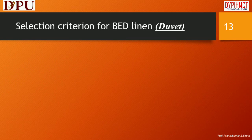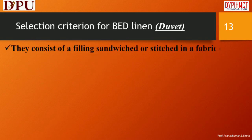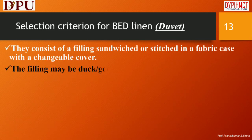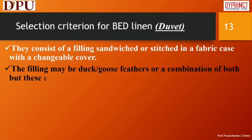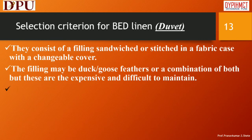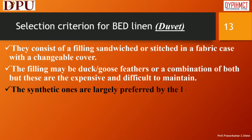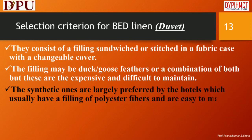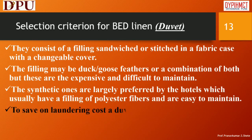Selection criterion for bed linen — Duvet: They consist of a filling sandwiched or stitched in a fabric case with a changeable cover. The filling may be duck or goose feathers or a combination of both, but these are expensive and difficult to maintain. The synthetic ones are largely preferred by hotels, which usually have a filling of polyester fibers and are easy to maintain. To save on laundering cost, a duvet should be covered with a duvet cover.